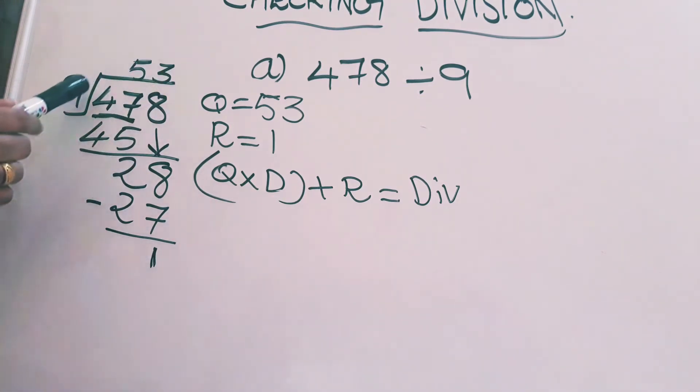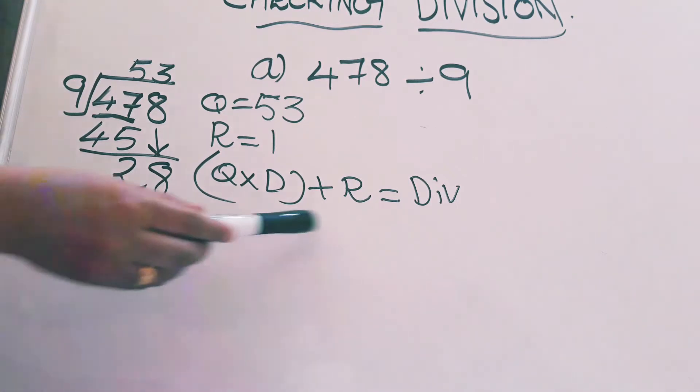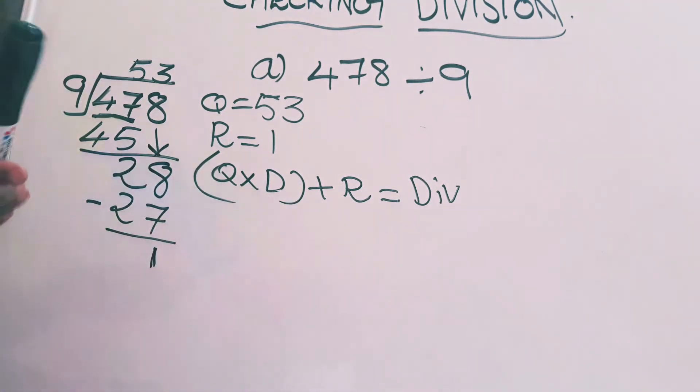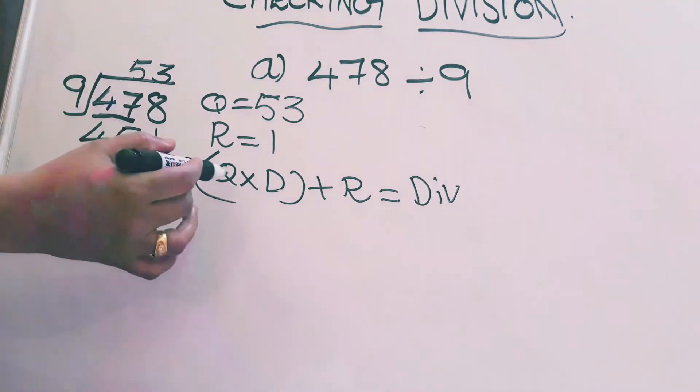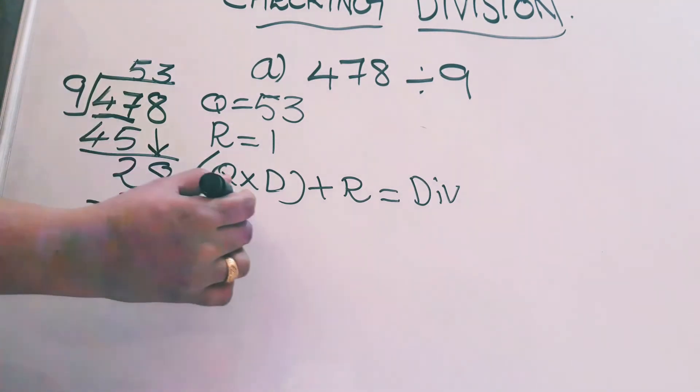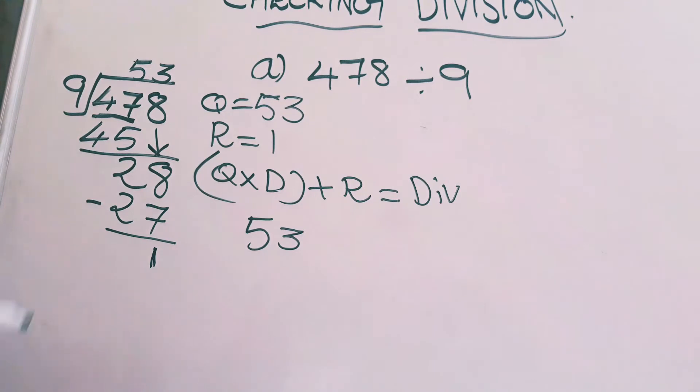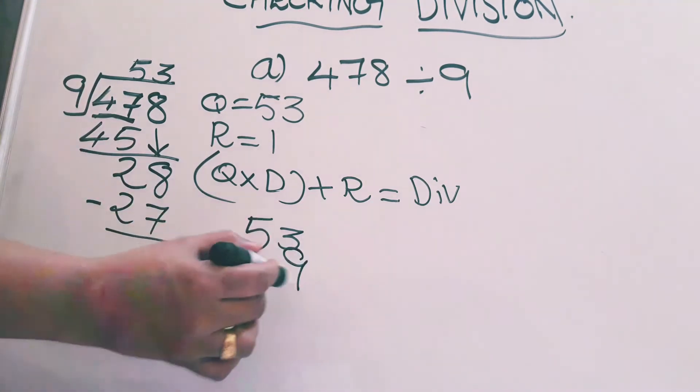That means multiply Q and D. I mean 53 into 9. And with that answer, you have to add remainder. Here remainder is 1. Then after doing all these, you should get dividend. Our dividend is here 478. Let's see how we are getting it. Q into D, Q means 53, 53 into D, 9.